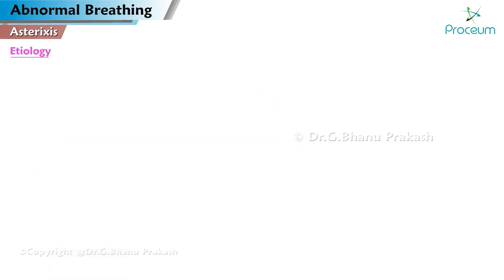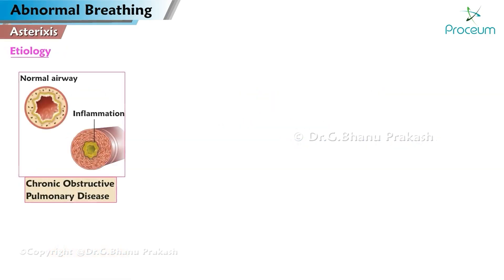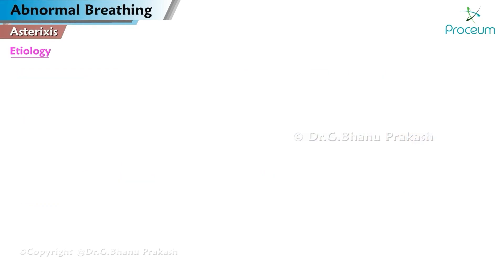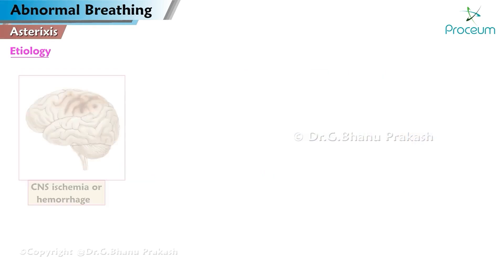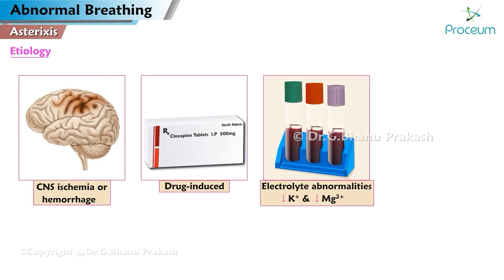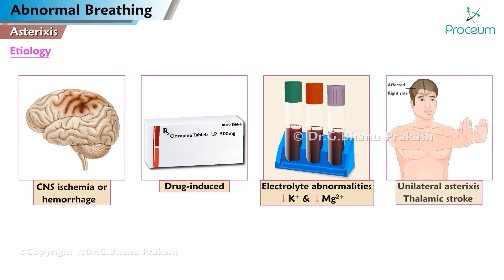Etiology of asterixis: More common causes include hypercapnia (e.g., carbon dioxide retention in chronic obstructive pulmonary disease), liver disease, renal failure, and alcoholism. Less common causes include central nervous system ischemia or hemorrhage, drug-induced (e.g., clozapine), electrolyte abnormalities (e.g., hypokalemia and hypomagnesemia), and unilateral asterixis from thalamic stroke.